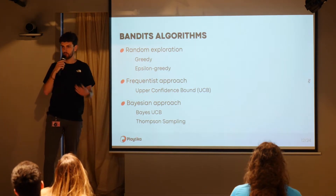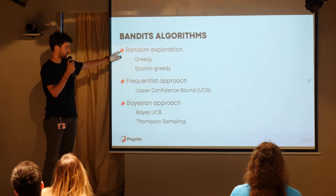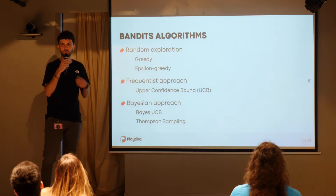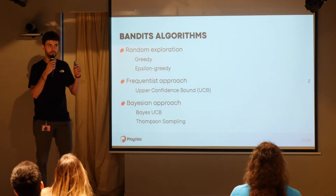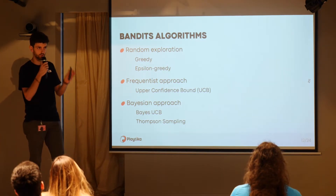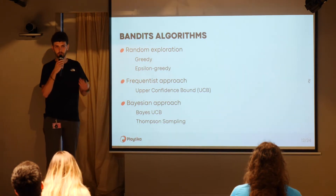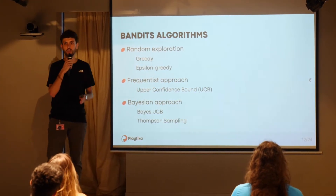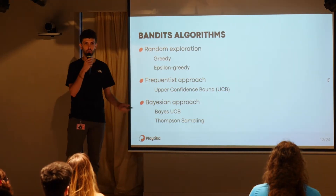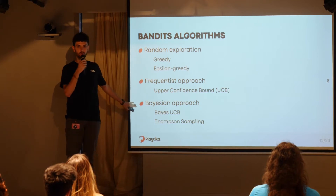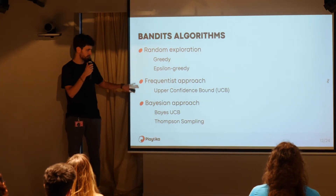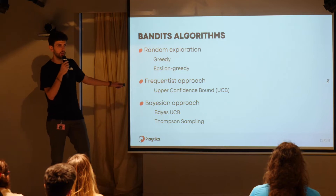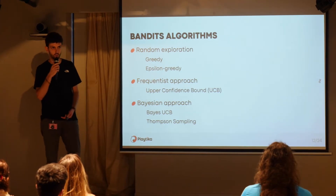There are many bandit algorithms studied in the literature. Some are based on random exploration — these are very naive. Greedy means you always take the action you think is best, so you only exploit and never explore. Epsilon-greedy means by default you take the best action, but with a small probability epsilon you take a random action. More sophisticated approaches include UCB — upper confidence bound — and Thompson sampling. I will describe Thompson sampling in more detail since it's the one we actually used.